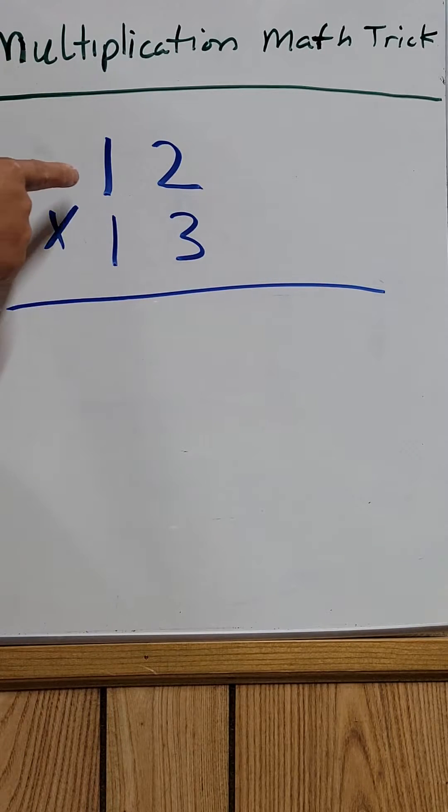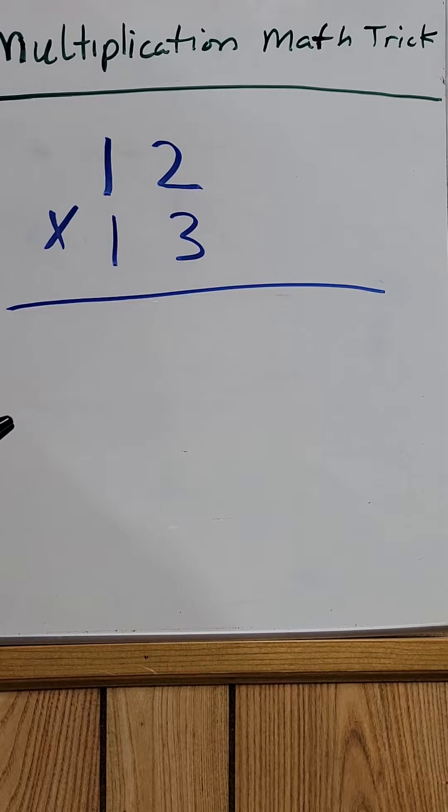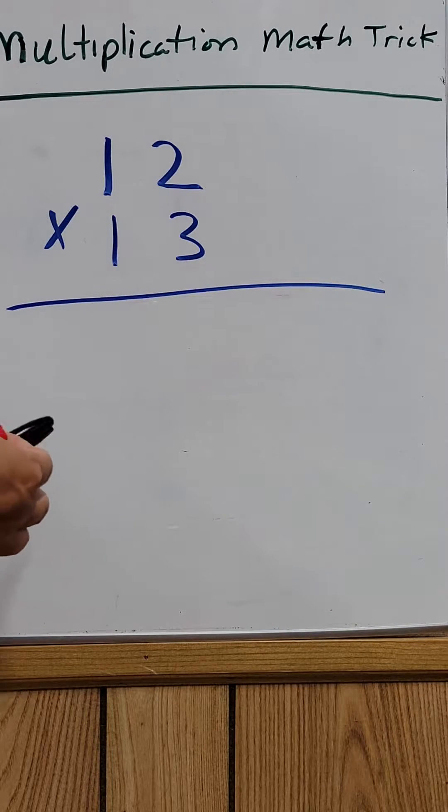So let's say you have 12 times 13. This is the trick that we're going to use.